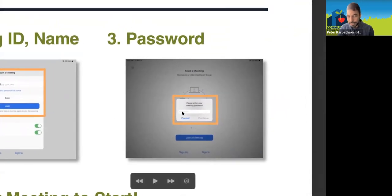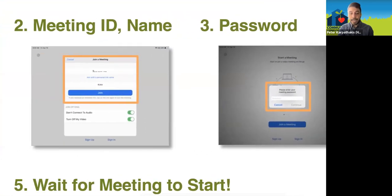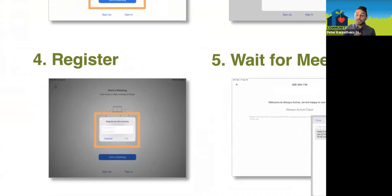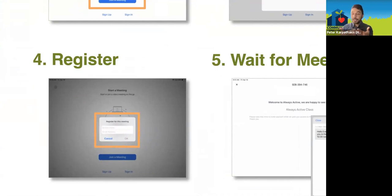If there is a password, you would type it in and click continue. If there isn't a password, you skip that and it brings you to registration — step four — which is also optional. Registration means the host might have a few questions they'll ask you before you're officially brought into the Zoom meeting. Usually an interviewer might not use this step, but just know it is a possibility.